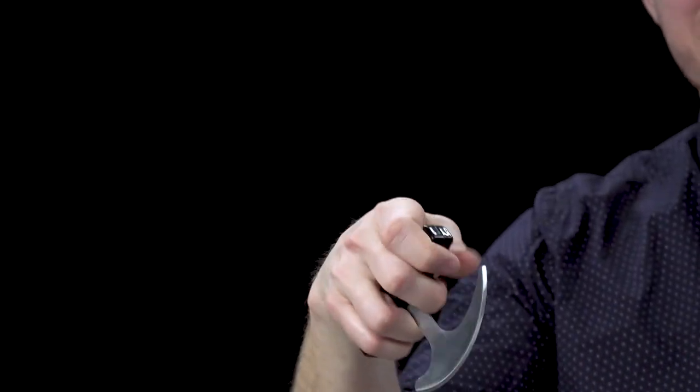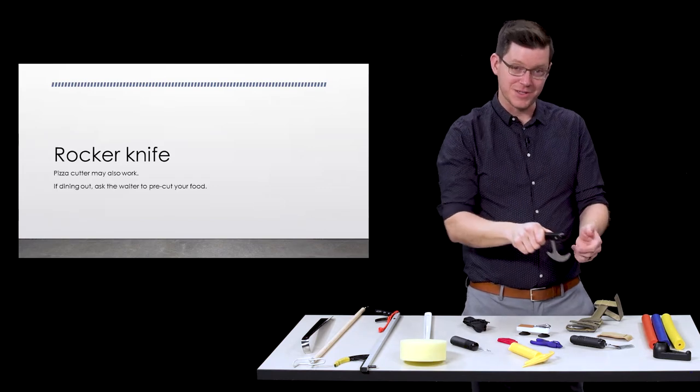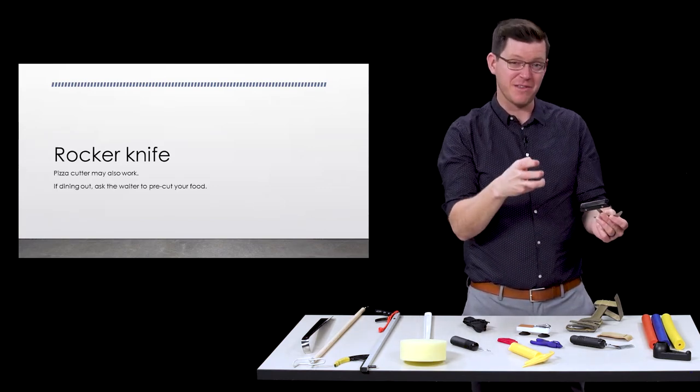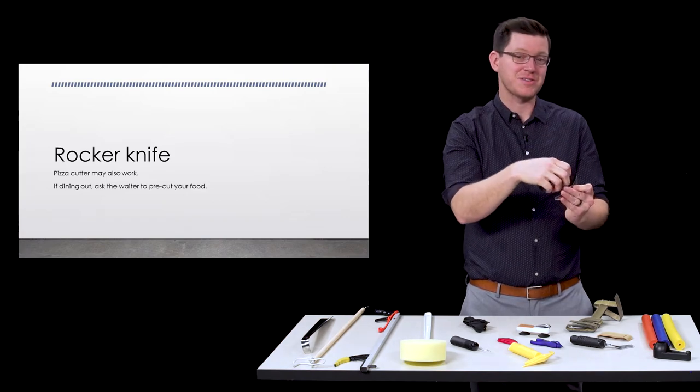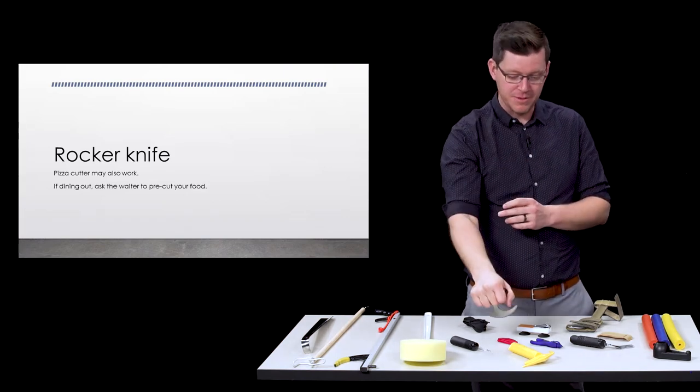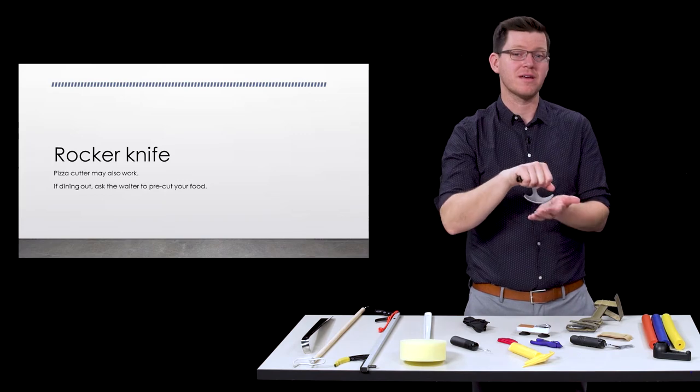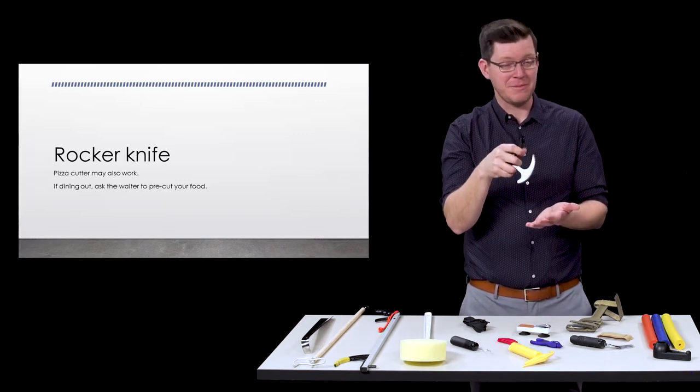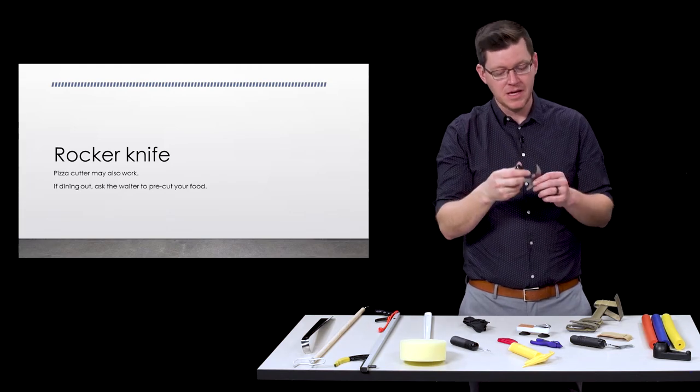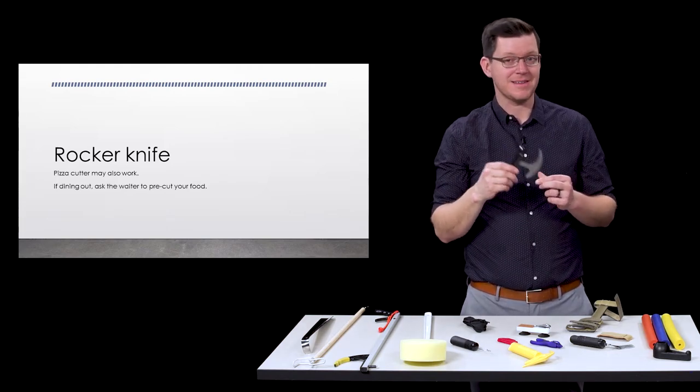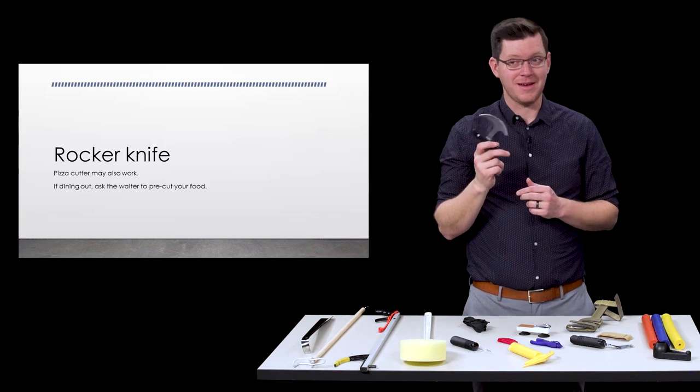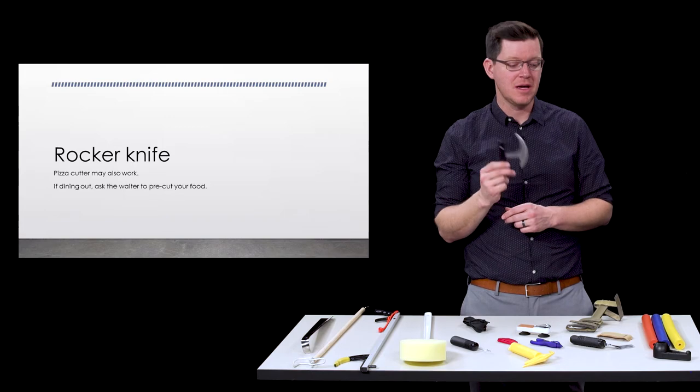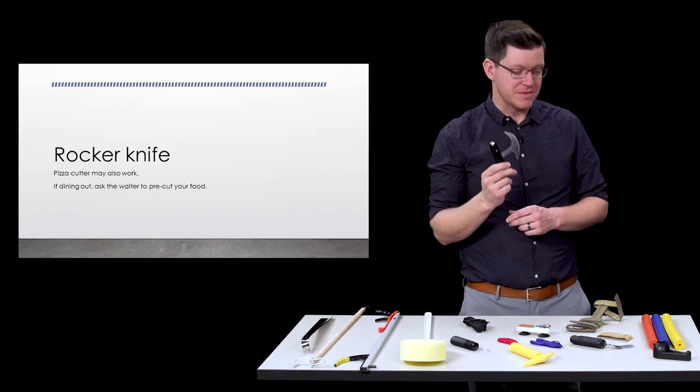A lot of times the part with cutting is really trying to hold on to a knife as you're cutting your food. It oftentimes will pop up out of your grip because you don't have the grip strength. This puts the weight of your hand and your arm on top of the food and you just rock back and forth cutting the food without having to have a whole lot of pinching strength. Of all the eating devices this is probably the most popular that I've recommended to people.